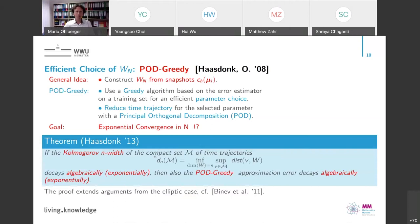The question is how well this performs — do we have fast convergence, like exponential convergence with respect to the low dimension? A result from a 2013 publication provides a theoretical backup: whenever the Kolmogorov n-widths, defined for the compact set of solutions depending on the parameter, have algebraic or exponential decay, then the POD greedy algorithm gives approximations with the same decay and the same constants. We are in a very well-established position.